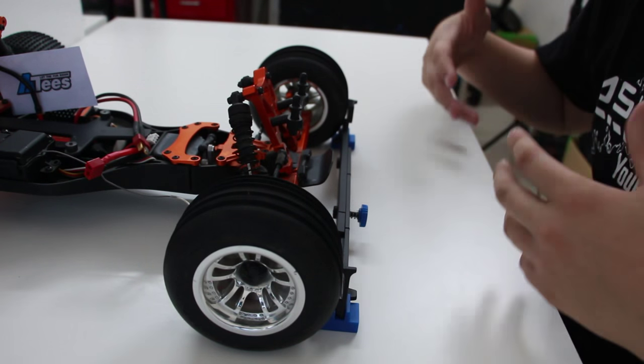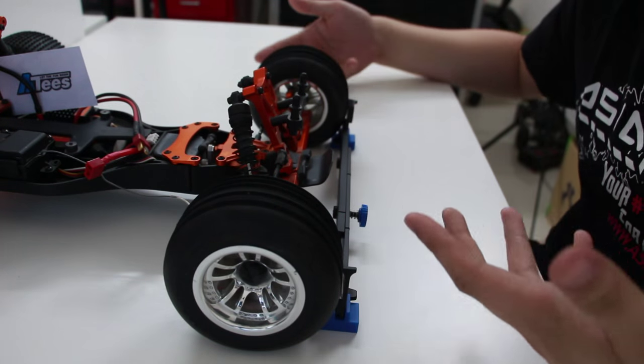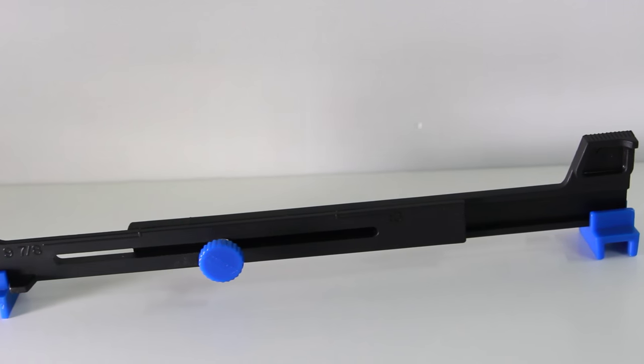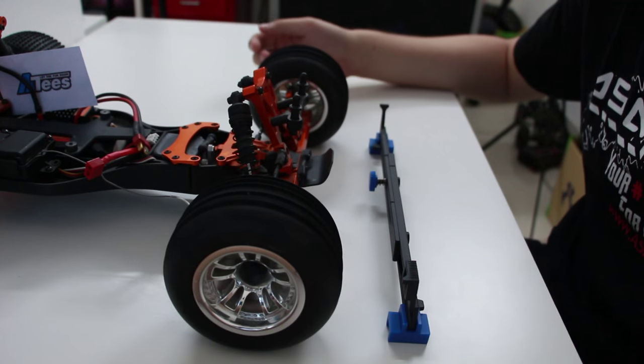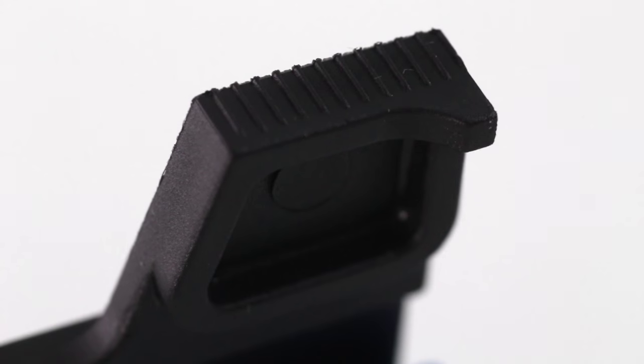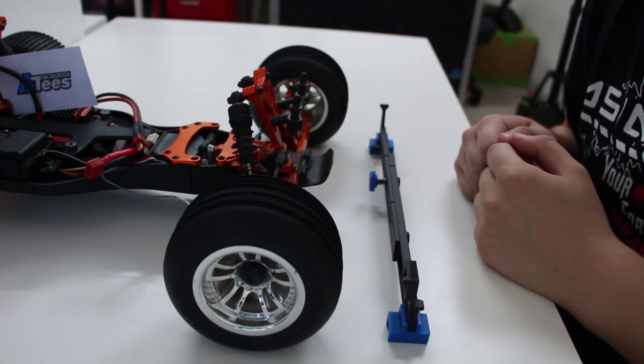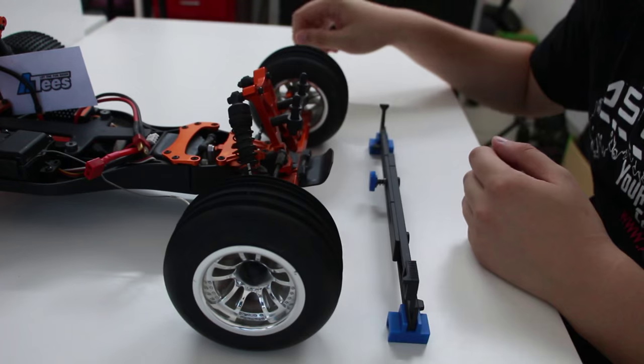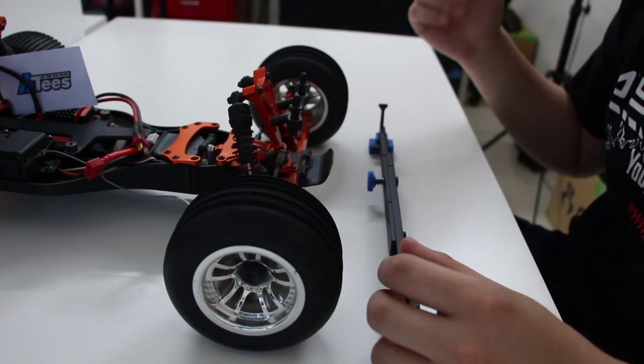If you're trying to measure toe out instead all you have to do is this complete process backwards. You flip this and do the front first and then you place it into the back and do the rear side and it should show you the toe out. This process is really easy to do. It can work for on-road cars as well. All you have to do is get the height a little higher so you can put blocks underneath the tire if you want and do the same process.